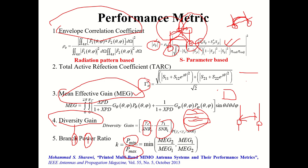BPR is related to MEG because the channel affects signal levels differently. If high power is applied to one antenna but its channel has severe fading, that signal may not reach the end user — the antenna becomes unusable. Therefore the branch power ratio must be maintained as low as possible — the power difference between the two antennas should be as small as possible.